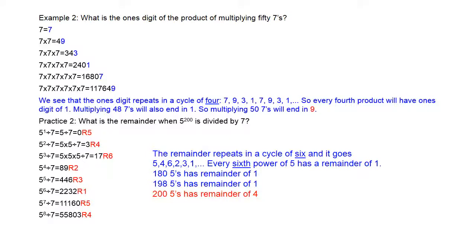For 5 to the power of 200, find a multiple of 6 close to 200 — that is 198. 5 to the power of 198 has a remainder of 1. Moving two more steps: 5 to the power of 199 has a remainder of 5, and 5 to the power of 200 has a remainder of 4.